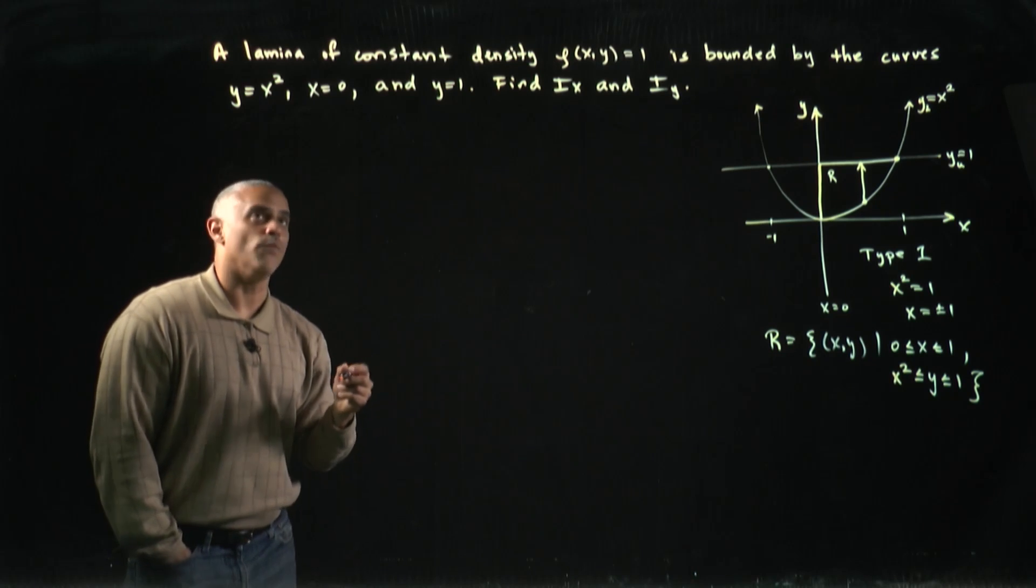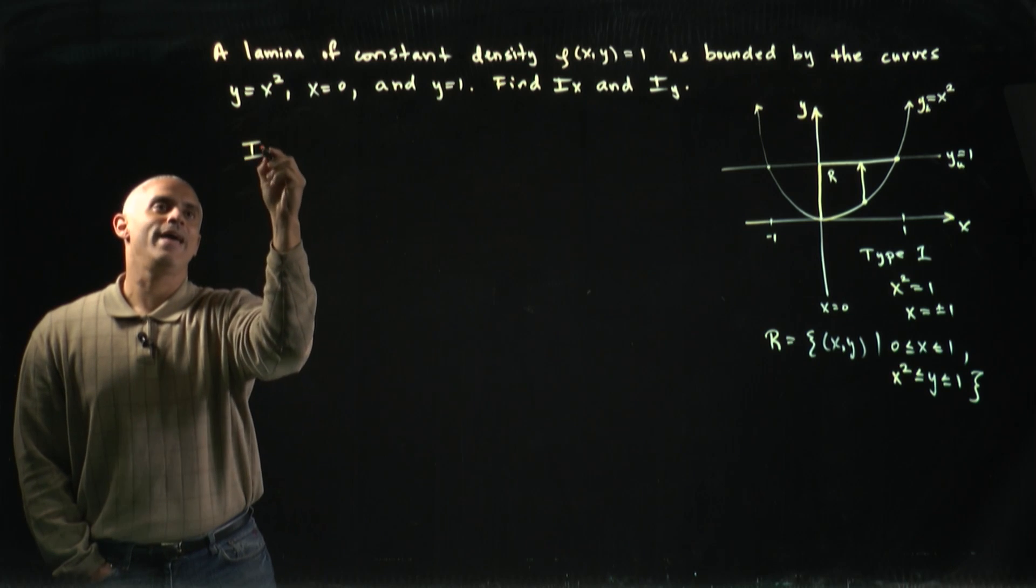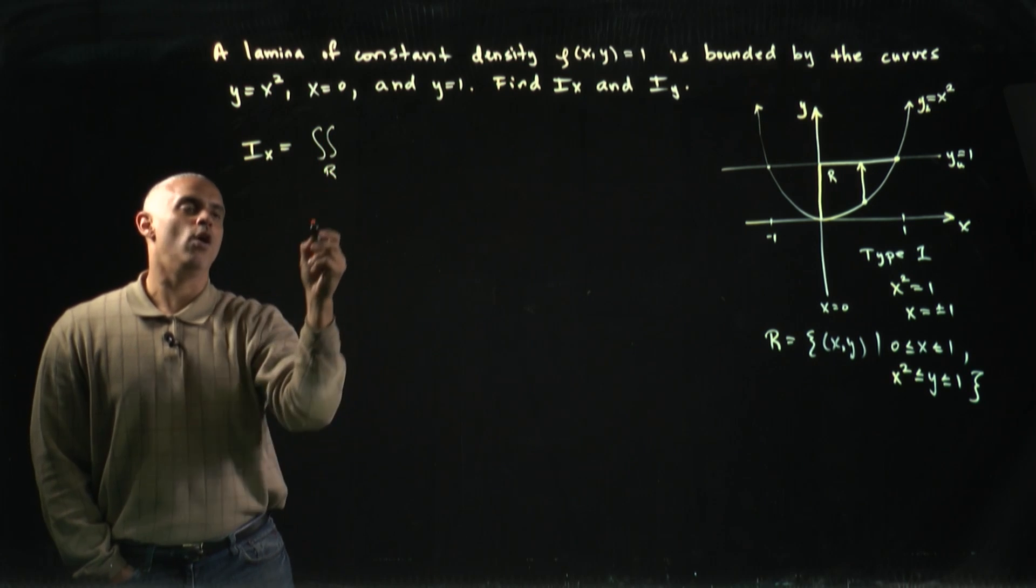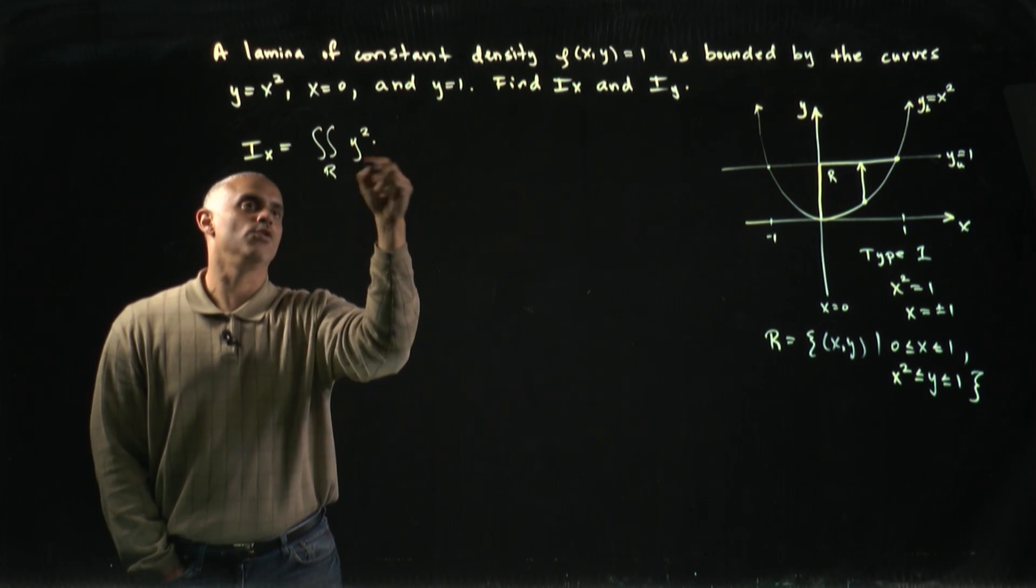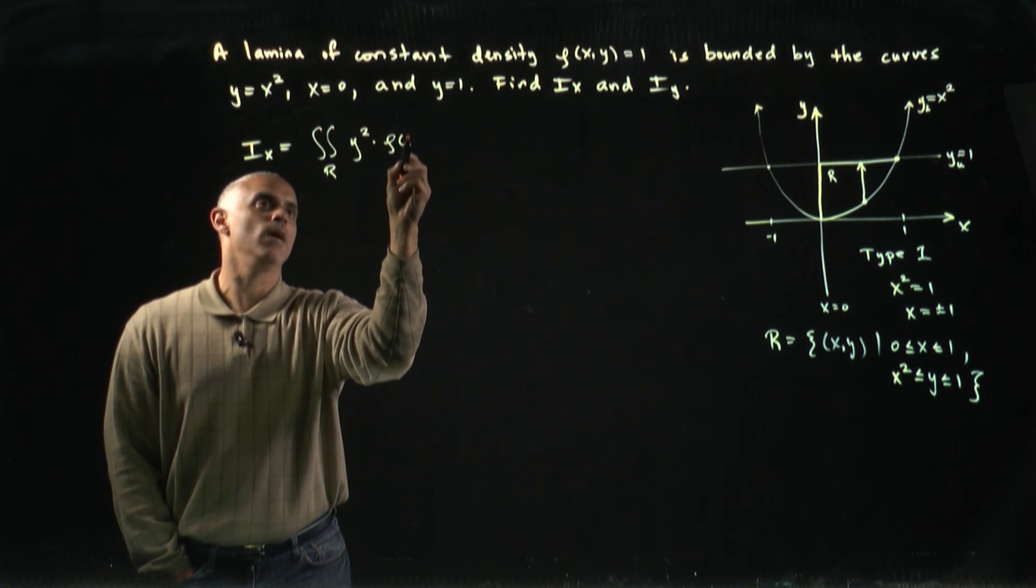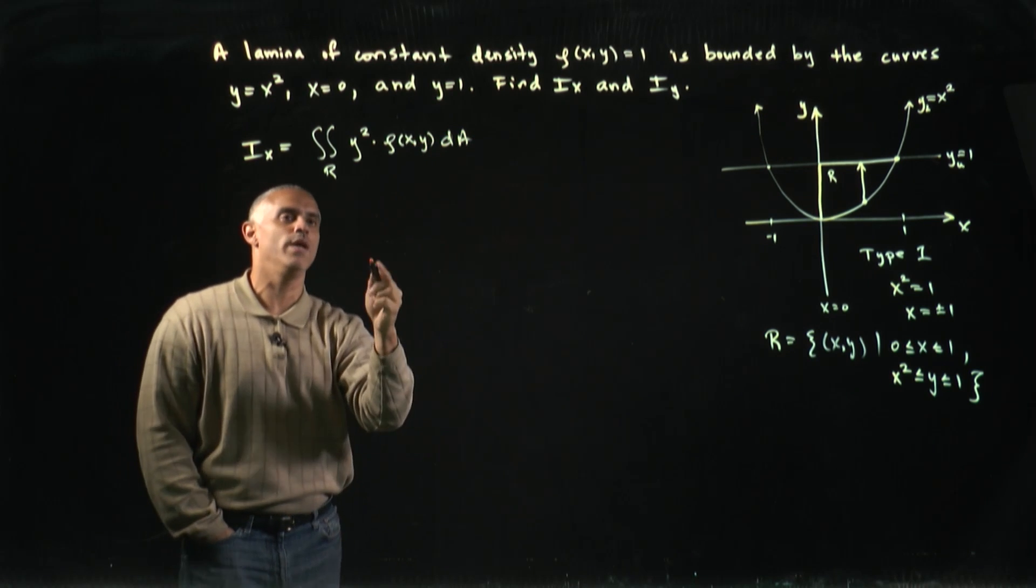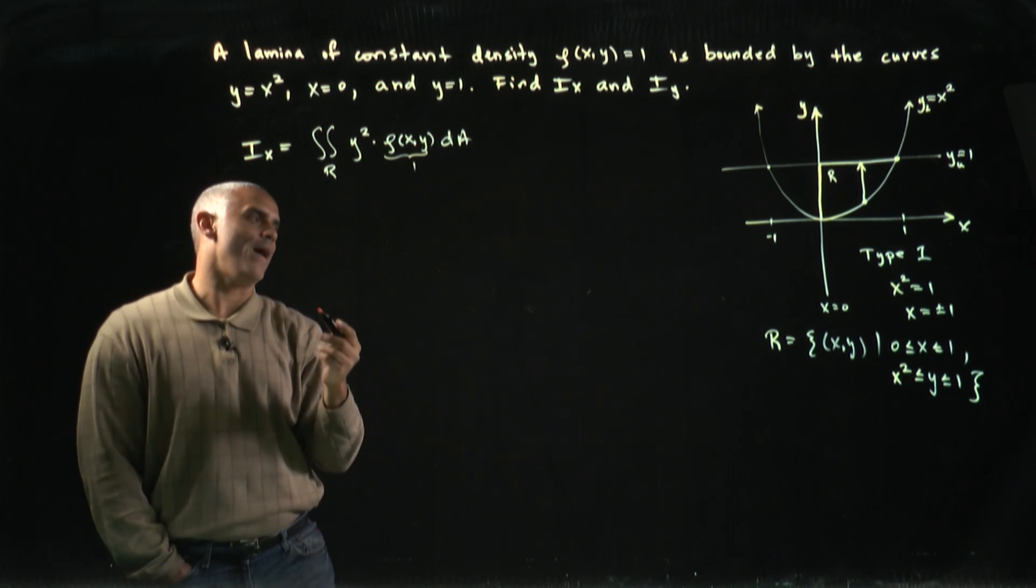Now we can write our double integral. To find I_x, we write this as the double integral over R as our integrand becomes the product of y squared times ρ(x,y) dA. And we have everything we need, ρ(x,y) is 1.